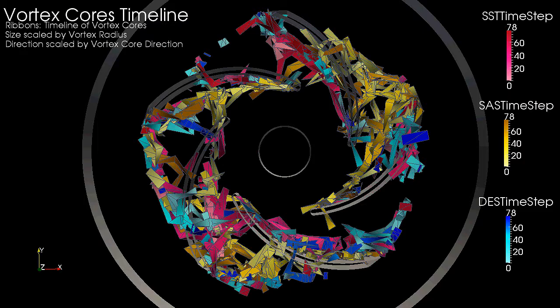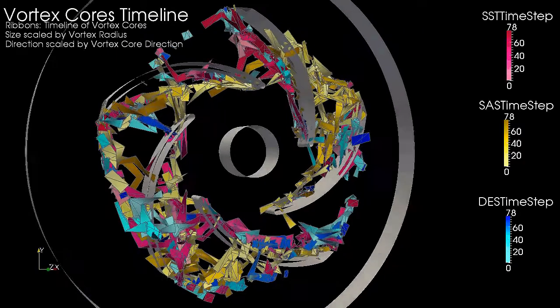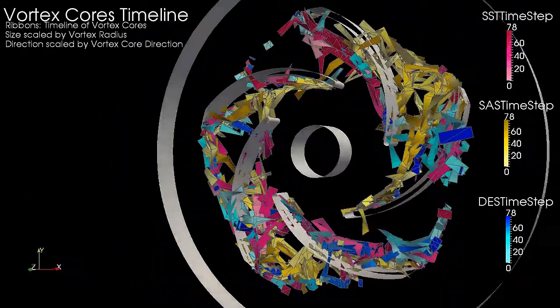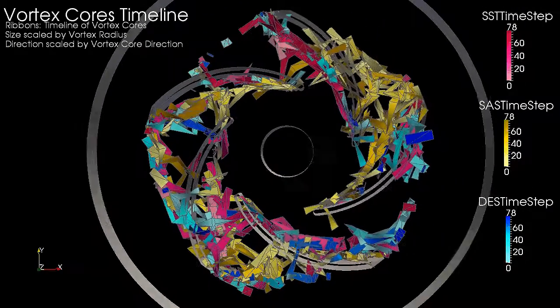Here, we see that the SST vortex cores cover most of the rotor blade segment at the top, while the SAS vortex cores cover most of the rotor blade segment to the right.